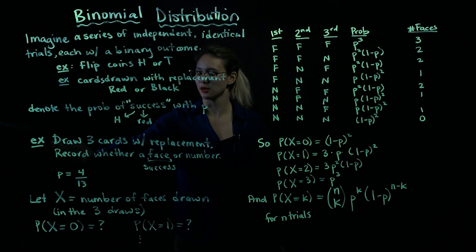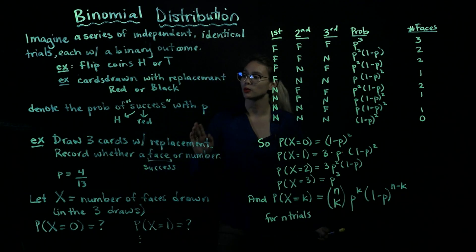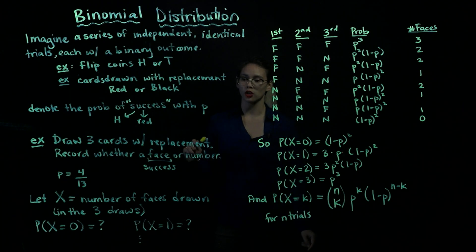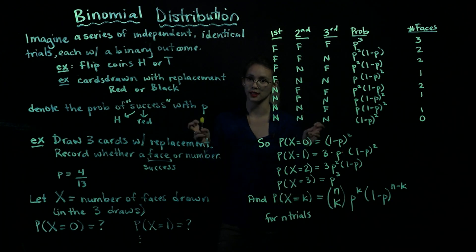Okay, so let's think about a couple of examples. This first example, we're going to draw three cards with replacement. So that means we'll draw one card, look at it, and put it back in there. So for each card, we're going to record whether we got a face or a number, and we're going to call face a success.